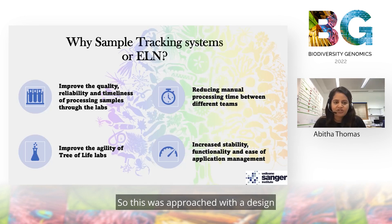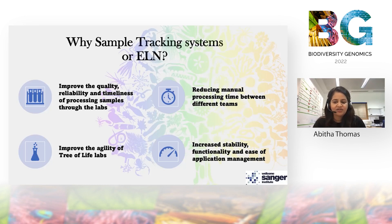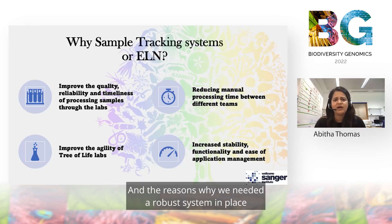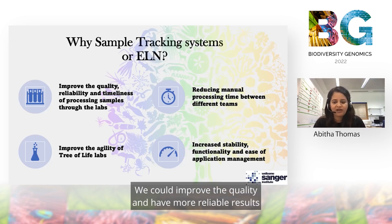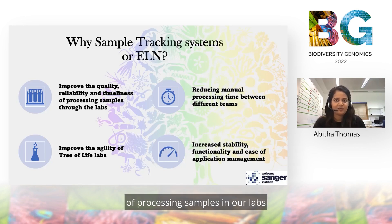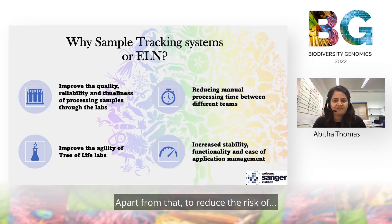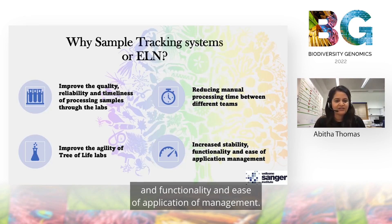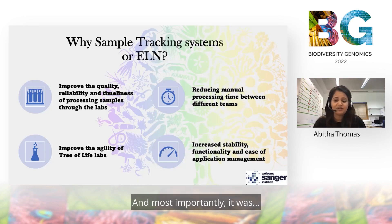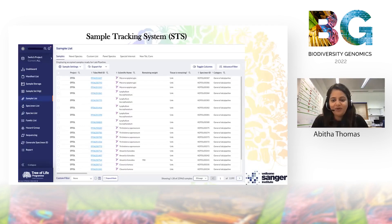This was approached with a design, and we implemented two systems: the Sample Tracking System, or STS, and an Electronic Lab Notebook, ELN, from BenchLink. The reasons we needed a robust system were to improve quality and reliability, maintain tight timelines for processing samples, improve ownership of lab data, improve the agility of the Tree of Life lab, reduce risk through increased stability and functionality, and most importantly, to decommission the numerous spreadsheets and ancillary sheets utilized by the lab.